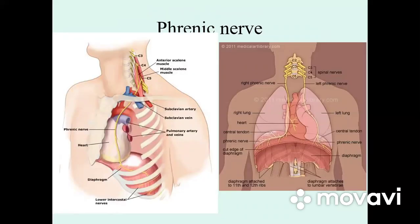The mixed branch — we have only one — is the phrenic nerve, nervus phrenicus. The phrenic nerve descends along the musculus scalenus anterior into the thoracic cavity, where it passes between the subclavian artery and vein. It continues downward, and both nerves pass in the anterior mediastinum between the pericardium and pleura.